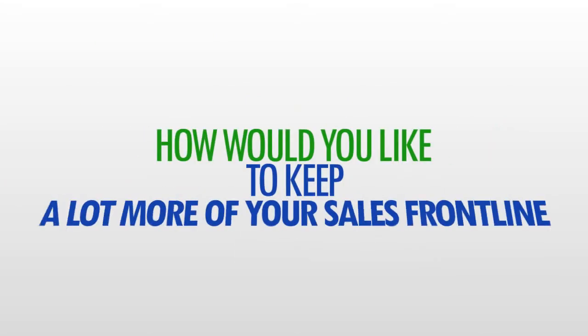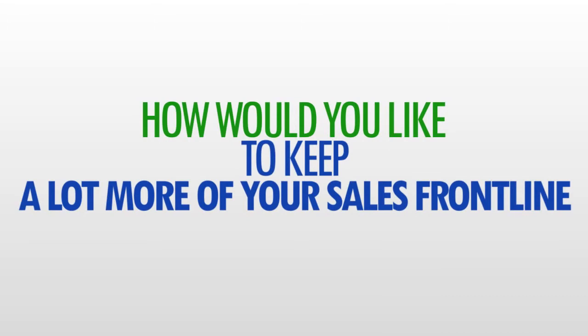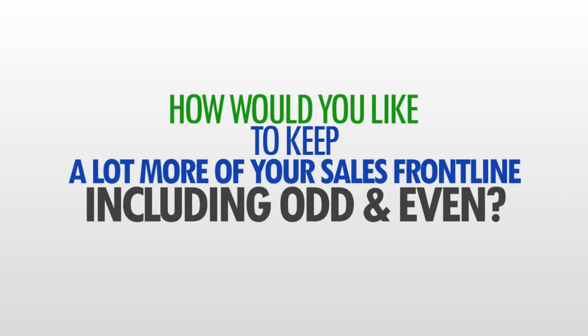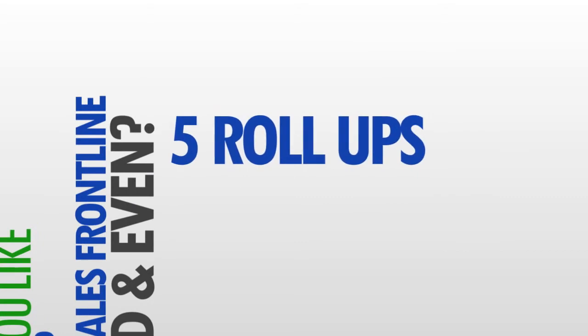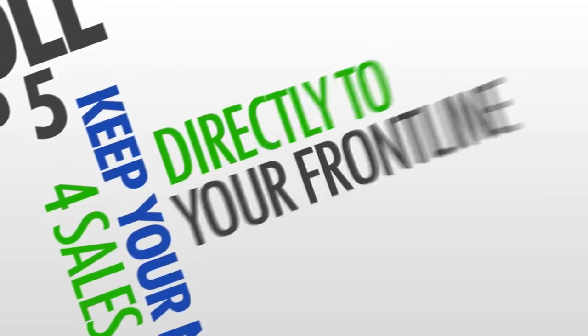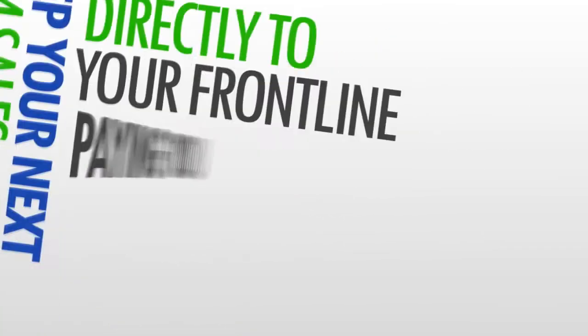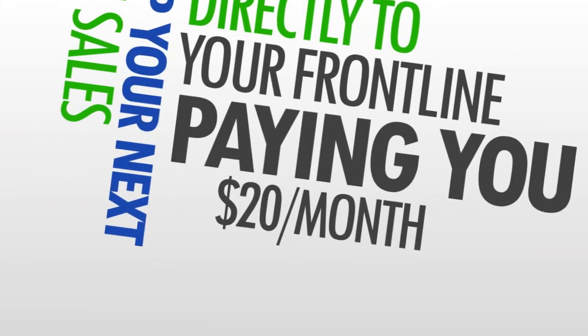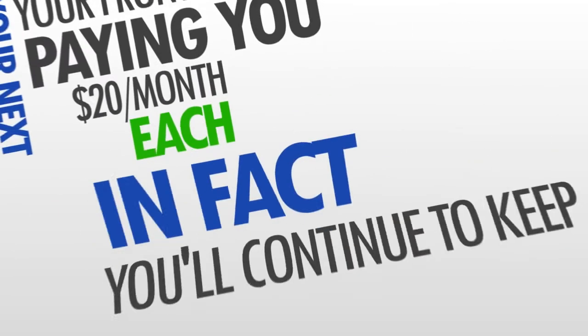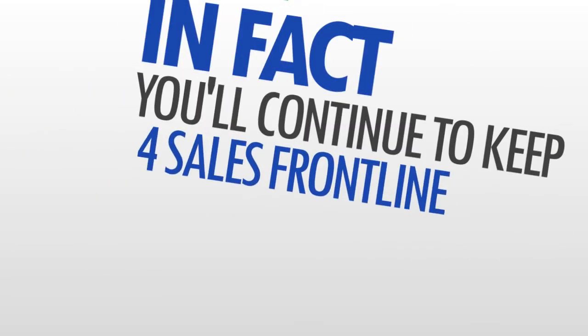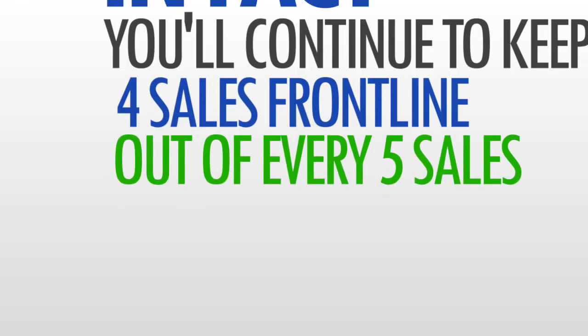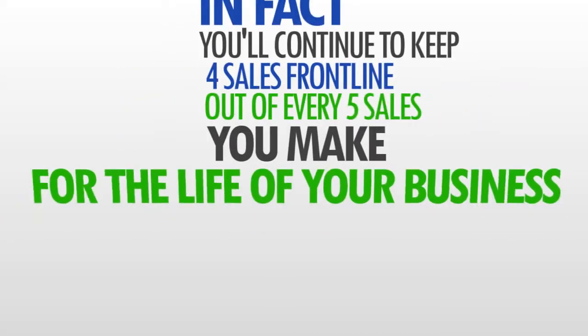How would you like to keep a lot more of your sales front line including odd and even? Well, all it takes is just five roll ups. That's it. Once you've rolled up five, you keep your next four sales directly to your front line, paying you $20 per month each. In fact, you'll continue to keep four sales front line out of every five sales you make for the life of your business.